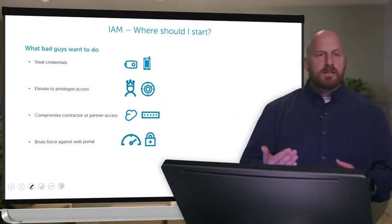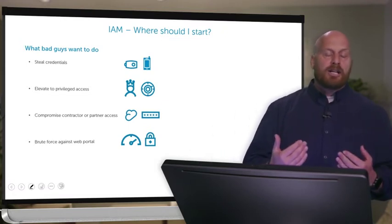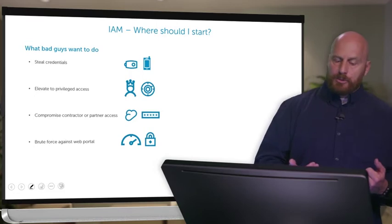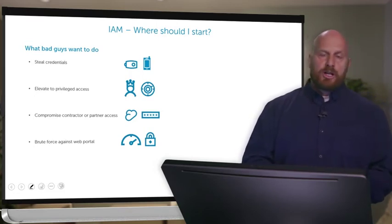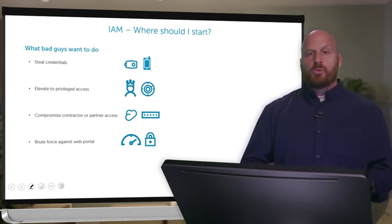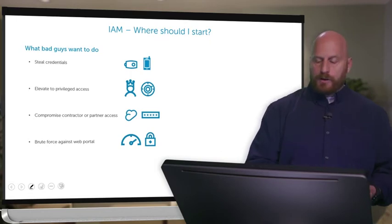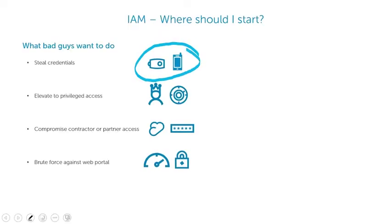If you start with these fundamentals of identity and access management, you'll get to governance. Think about what bad guys are trying to do and how these things can help you. People are always trying to steal credentials — if they can get your password, they log on as you. But if you have multi-factor in place, somebody who steals your password can't do anything with it because they don't have that second factor. It's much more difficult to hack in when a second factor is required.